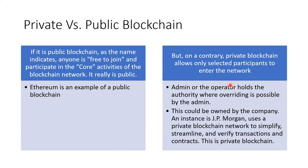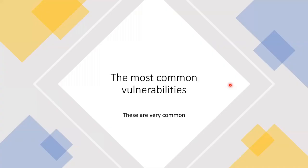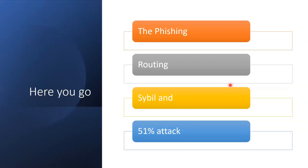Today the Log4J attack is very threatening and some solutions are coming, but it has already attacked cryptocurrency-based transactions. Blockchain is still vulnerable — it's not 100% safe. There are four common attacks: the first is phishing, second is routing, third is Sybil, and the fourth is the 51% attack.